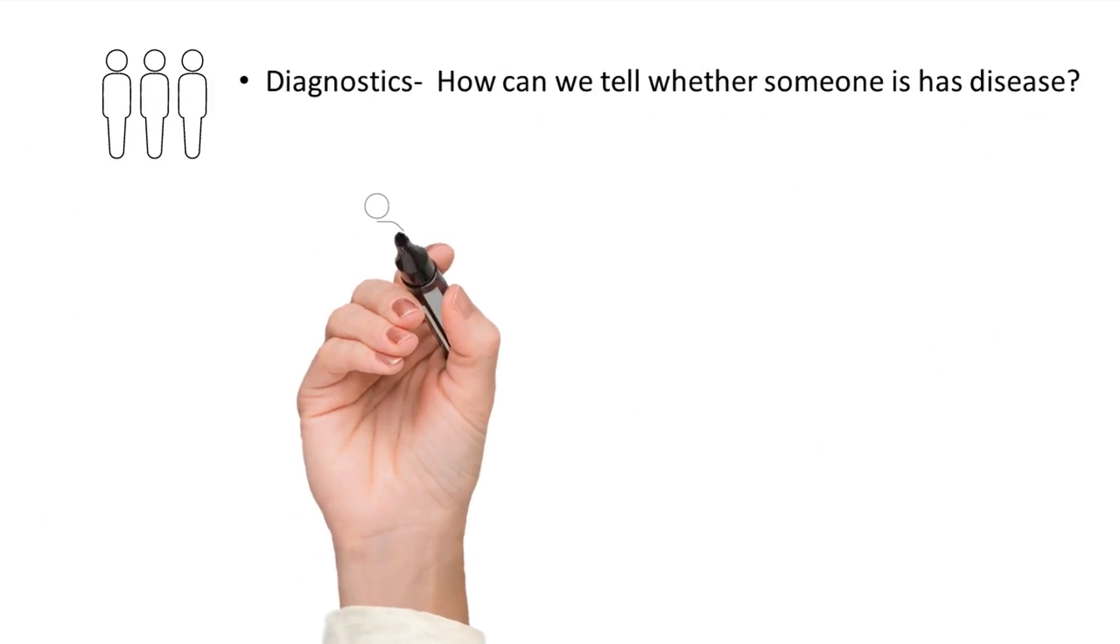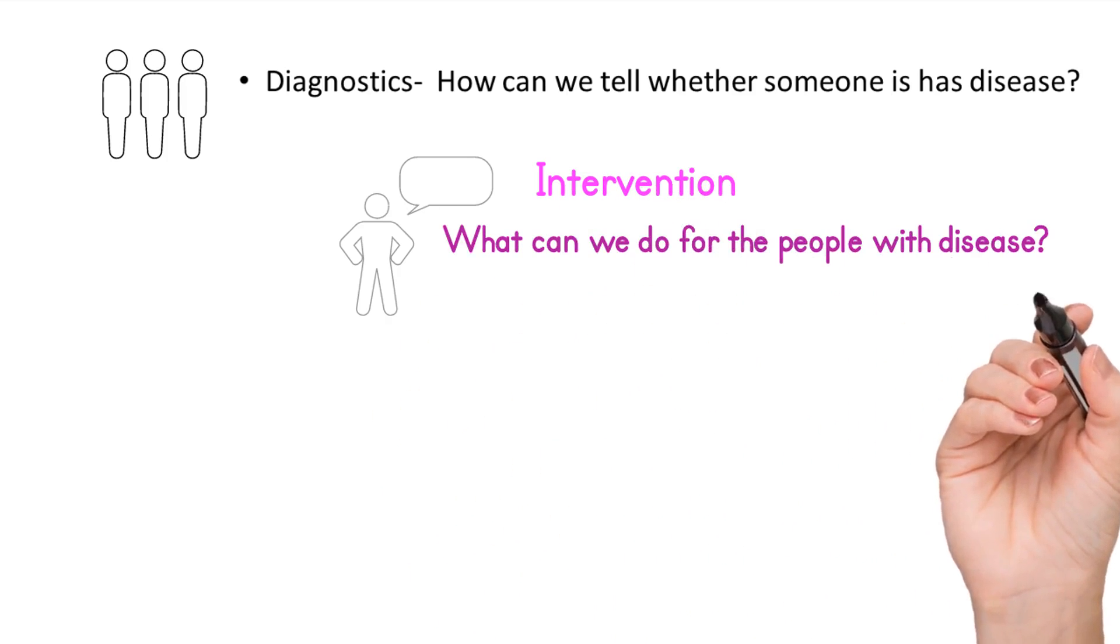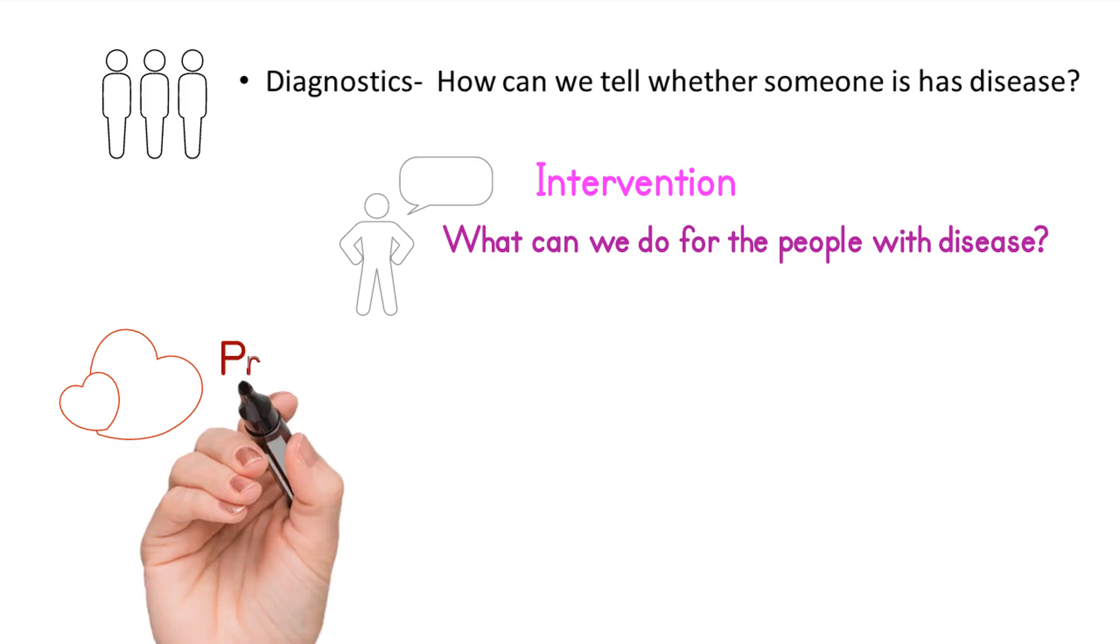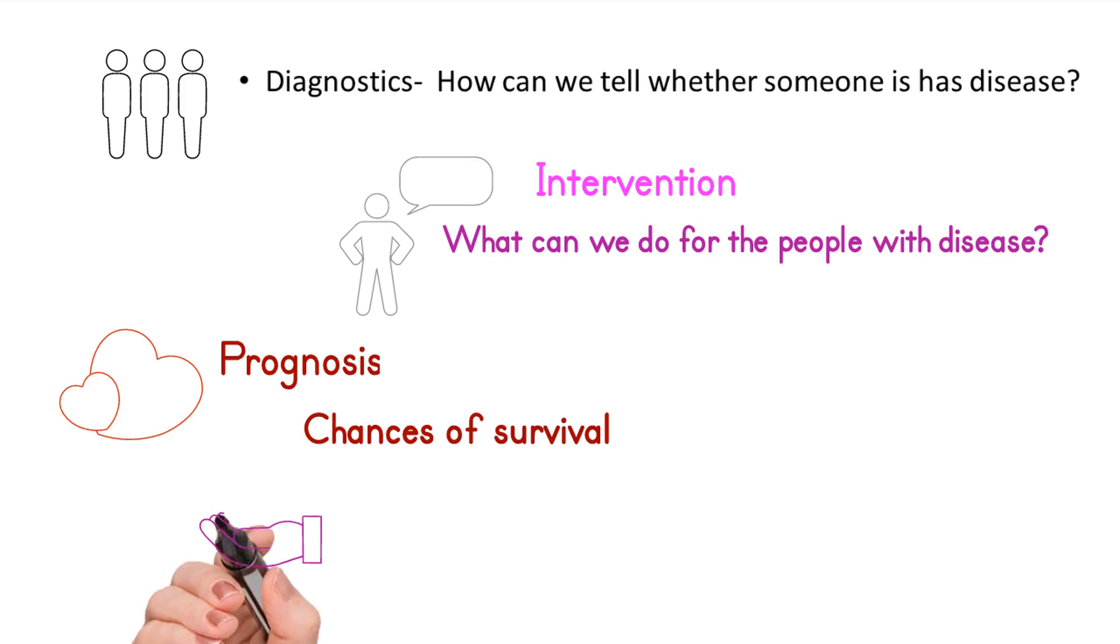Diagnostics - How can we tell whether someone has disease? Intervention - What can we do for the people with disease? Prognosis - If an individual has disease, what is their chance of survival? The probability of experiencing complications? Patient experiences - How does it feel to have the disease?